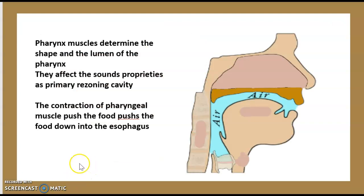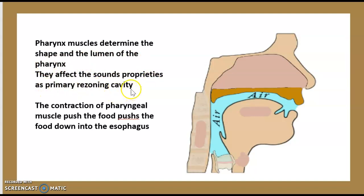What is the role of the muscles of the pharynx? Pharyngeal muscles determine the shape and the lumen of the pharynx. They affect the sound properties as the primary resonating cavity. The contraction of pharyngeal muscles pushes food down into the esophagus.